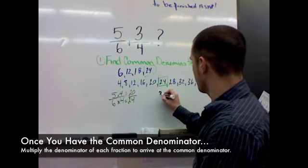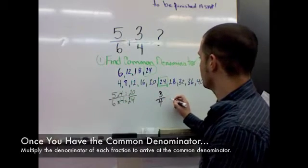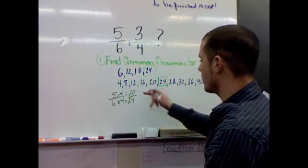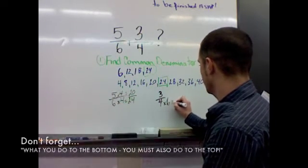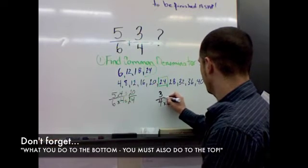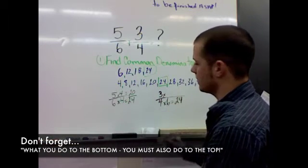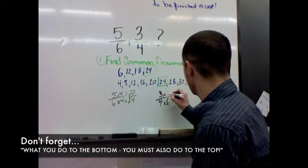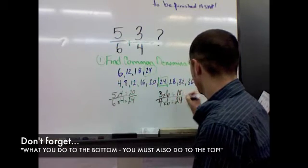Okay, now we've got to do it for 3/4. 3 over 4. Turn 4 into 24, we have to multiply it by 6. Okay, 3 times 6: 3, 6, 9, 12, 15, 18.